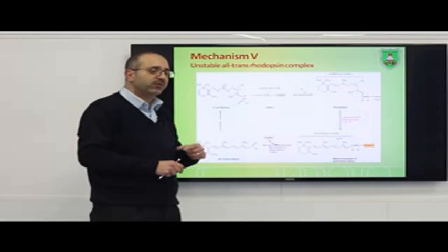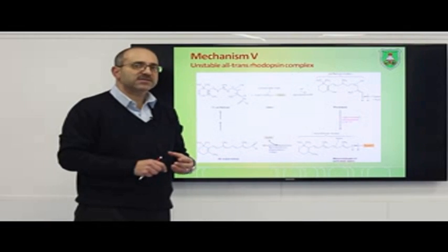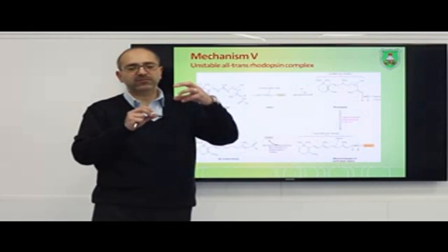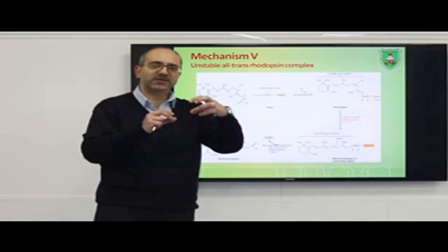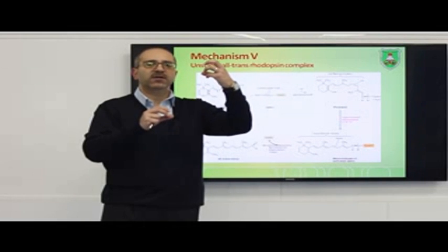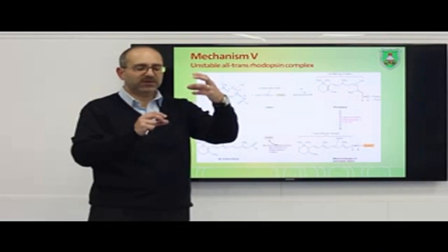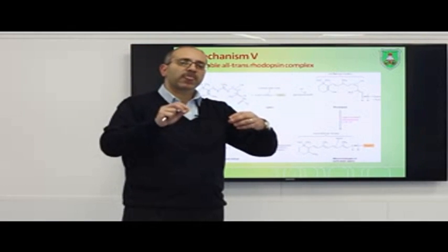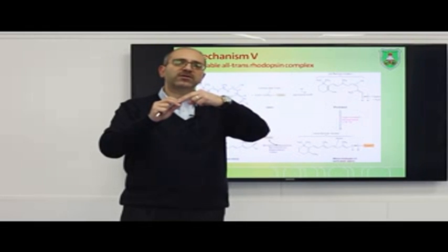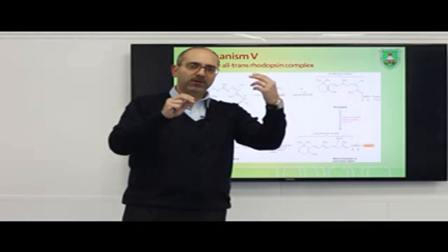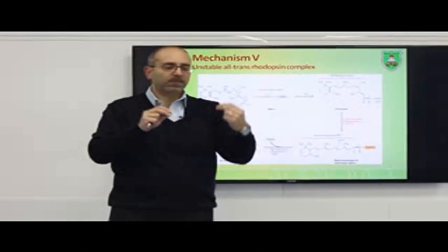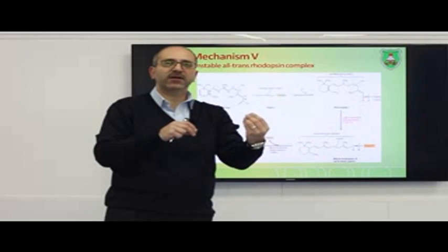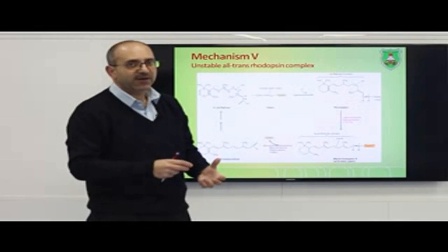Mechanism number five is related to the release of all-trans retinal. When rhodopsin associated with 11-cis retinal absorbs light, the pigment changes structure and the protein undergoes different transformations. Eventually the all-trans retinal molecule is released from the opsin, which is another intrinsic mechanism of inactivating the protein.